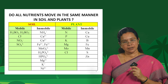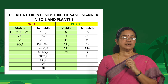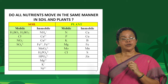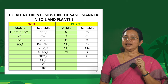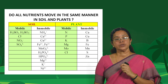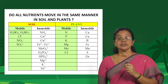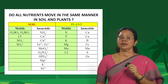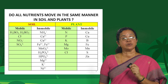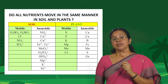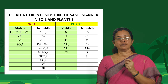Do all nutrients move in the same manner in soil and plants? No — all nutrients do not show similar mobility in soil and plants. For example, nitrogen is one element available in both cationic and anionic forms. The nitrate anion is highly mobile in soil, but the ammonium cation is immobile in soil. Similarly we have other categories of mobile and immobile nutrients.